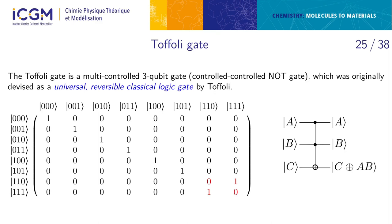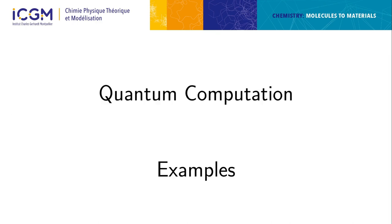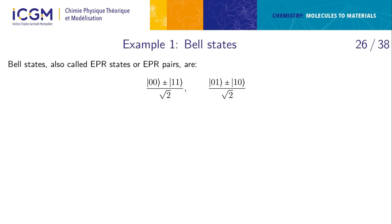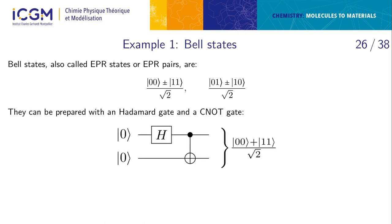Bell designed a thought experiment: Charlie prepares two particles, sends one to Alice and one to Bob, who are far apart. Alice measures observables Q or R; Bob measures S or T, each giving values ±1. If the world were classical, the expectation value of products like QS, RS, RT, QT satisfies |⟨QS⟩ + ⟨RS⟩ + ⟨RT⟩ - ⟨QT⟩| ≤ 2. But with entangled Bell states and quantum mechanical observables, you can show this quantity exceeds 2 — violating Bell's inequality.